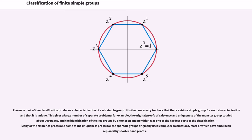The main part of the classification produces a characterization of each simple group. It is then necessary to check that there exists a simple group for each characterization and that it is unique. This gives a large number of separate problems. For example, the original proofs of existence and uniqueness of the monster group totaled about 200 pages, and the identification of the Ree groups by Thompson and Bombieri was one of the hardest parts of the classification. Many of the existence proofs and some of the uniqueness proofs for the sporadic groups originally used computer calculations, most of which have since been replaced by shorter hand proofs.